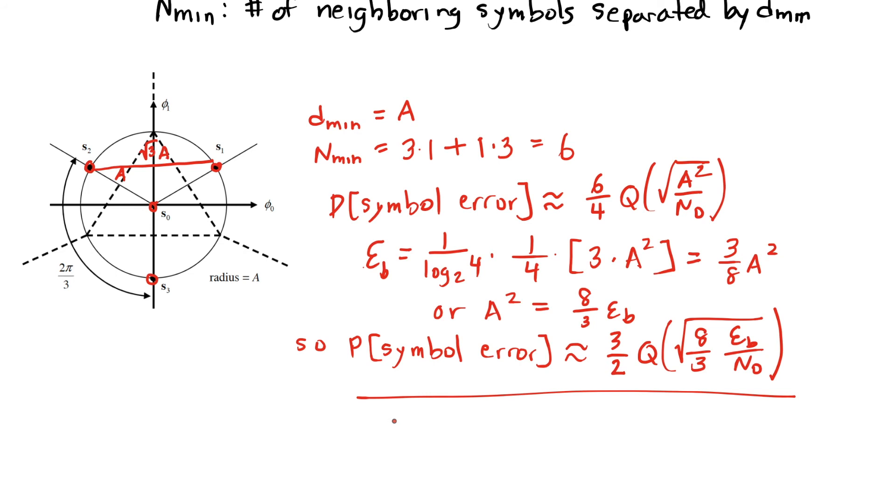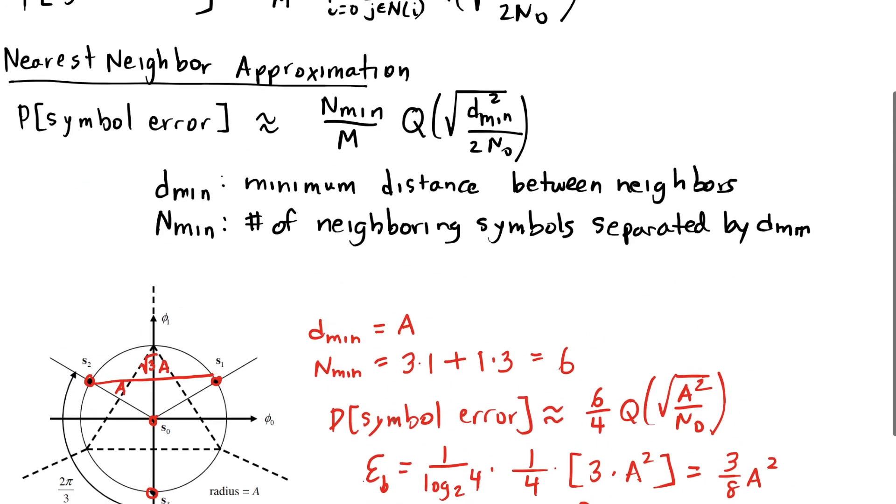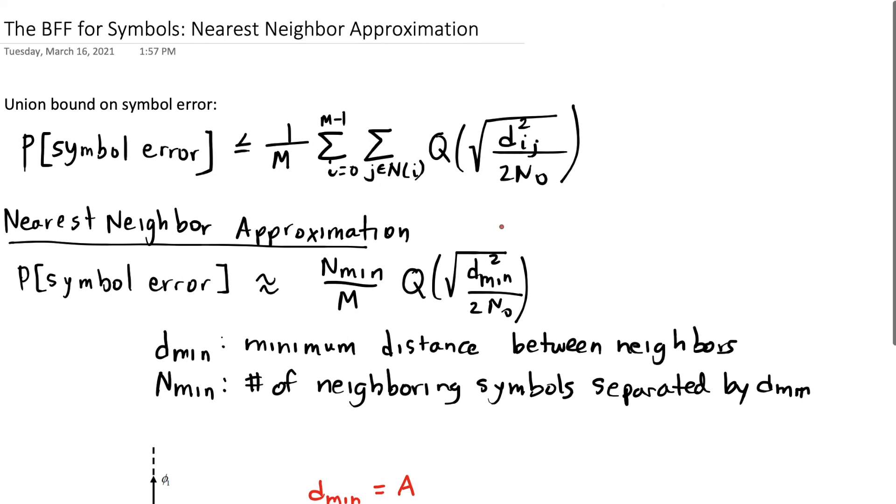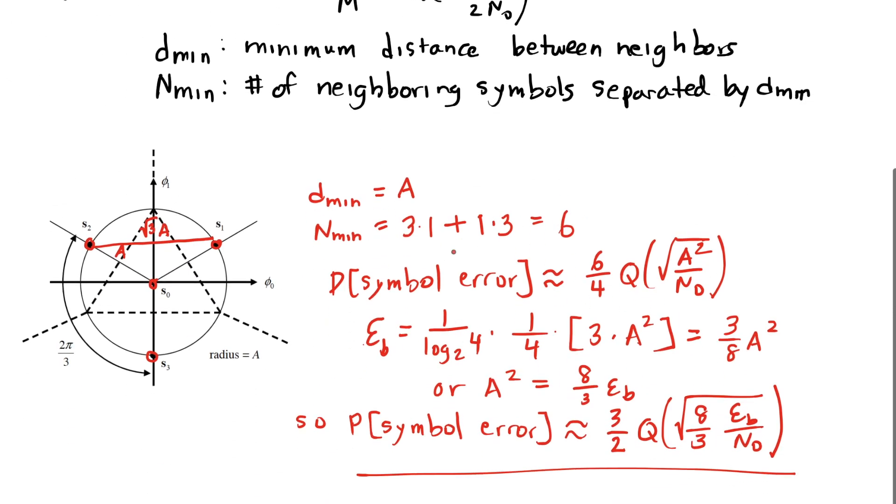So compared to the union bound, we're ignoring the distances that turn out to be larger, like in this case the square root of 3 times a. We don't have to write any of those terms into our expression. Sure, we can go quickly, but is it accurate?